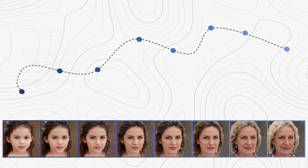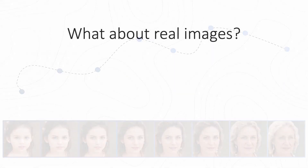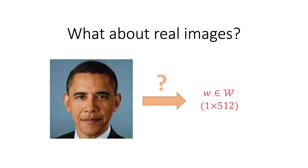Many have shown that we can leverage StyleGAN's rich latent representations to perform extensive and diverse image editing, such as aging. But what if we wanted to apply such edits on real images? To do this, we first need to invert the given image into StyleGAN's latent space and find the image's latent representation, such that passing this representation, or code, to the pre-trained StyleGAN returns the original image.